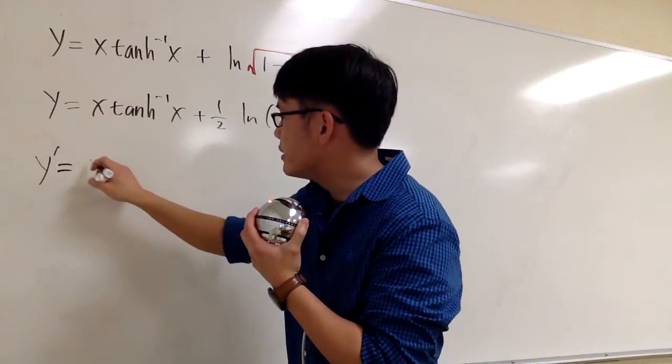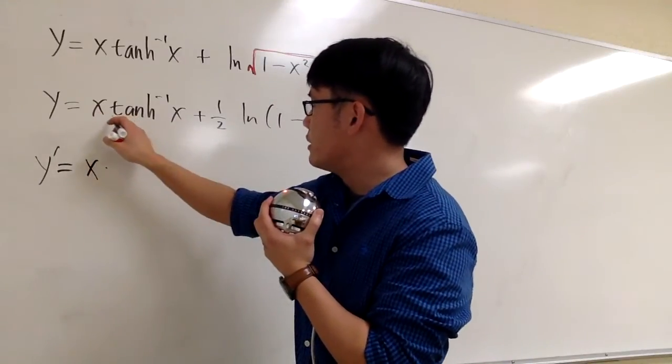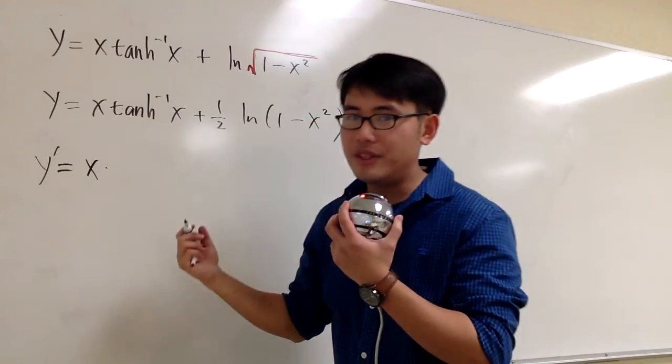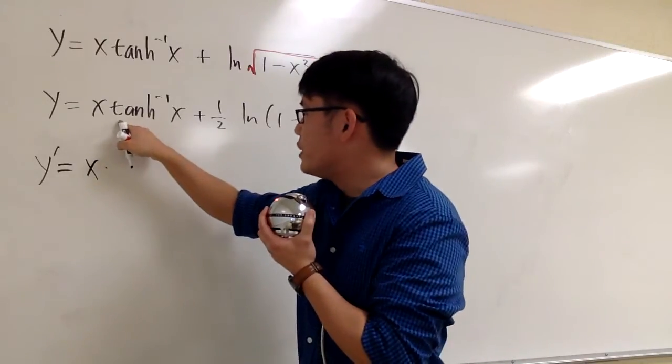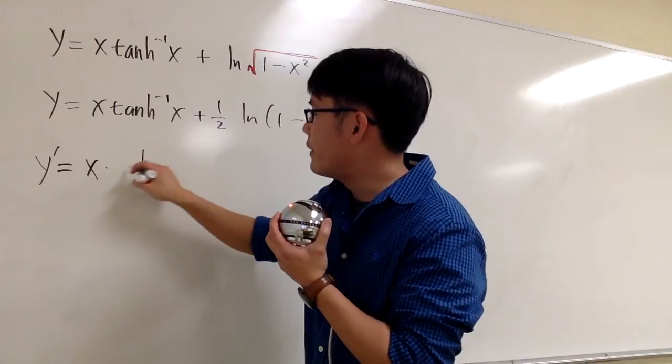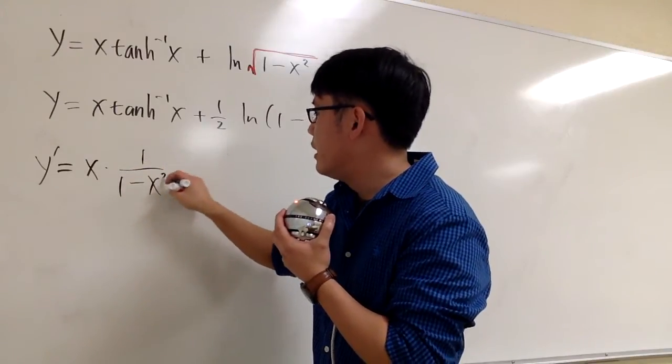We do that. We write down the x first times the derivative of this. So check out my other video, and you will see that the derivative of inverse tangent is 1 over 1 minus x squared.